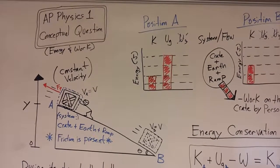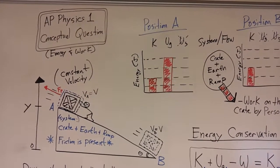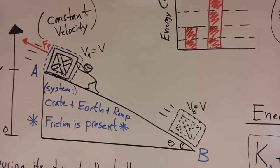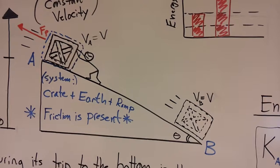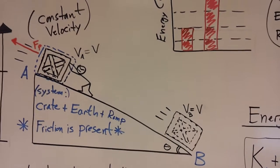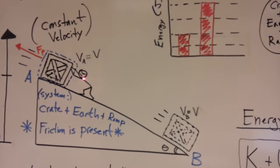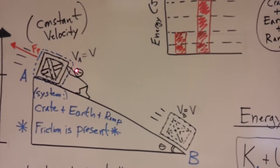So here's an AP Physics 1 conceptual question which deals with energy and work. The situation involves a box or crate sliding down an inclined plane, and to prevent this box from sliding down and accelerating, to keep it moving at a constant velocity,